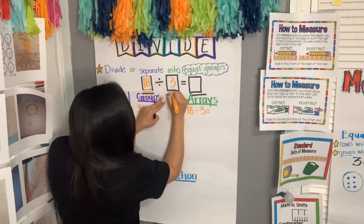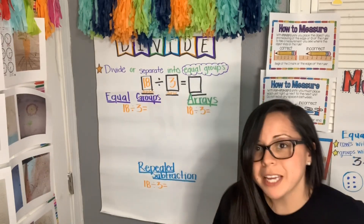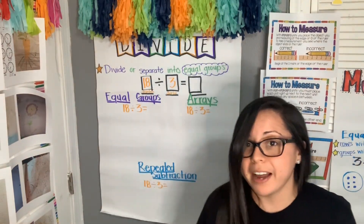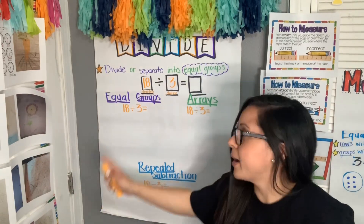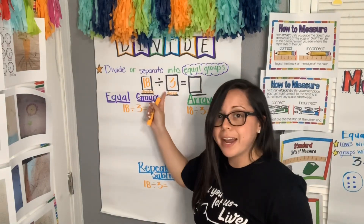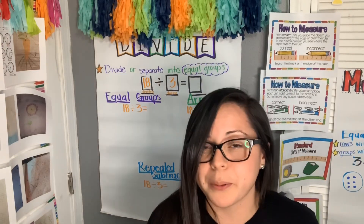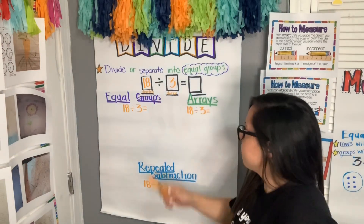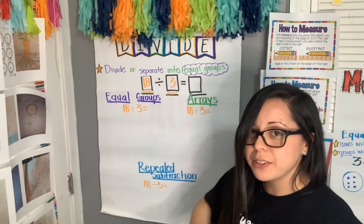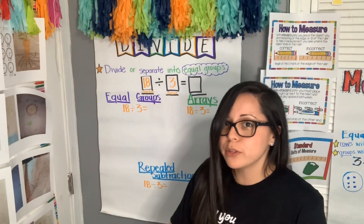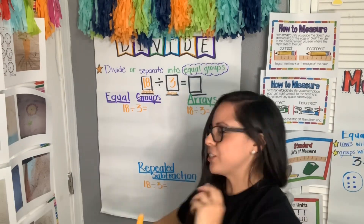The second number is called the divisor. The divisor tells me how many groups I am going to divide the dividend into. So here I have 18 — that means I'm going to divide the number 18 into three equal groups. And finally, the answer or result is called the quotient.